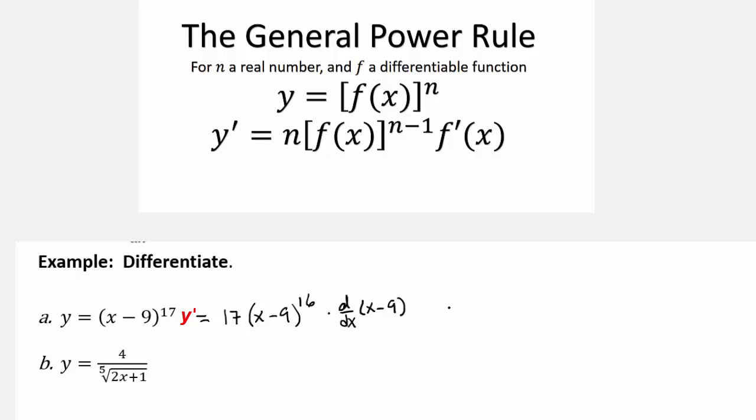But what's the derivative of x minus 9? Just 1. So this is 17 times x minus 9 to the 16th times 1, or in other words, just 17 times x minus 9 to the 16th power.